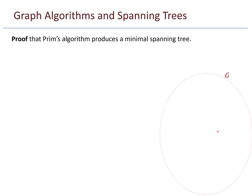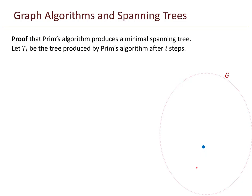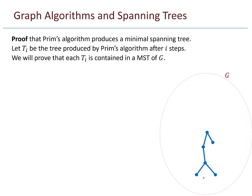Let's see a proof for Prim's algorithm — that it actually produces a minimal spanning tree. Let T_i be the tree produced by Prim's algorithm after i steps. We will prove that each T_i is contained in a minimal spanning tree of G. If T_1, T_2, T_3 — all the way up to the very end — are each contained in a minimal spanning tree, then the final result, which is a spanning tree itself, must be a minimal spanning tree of G.